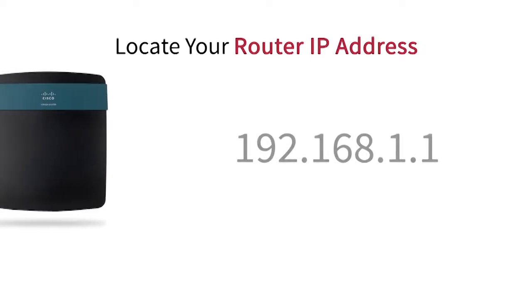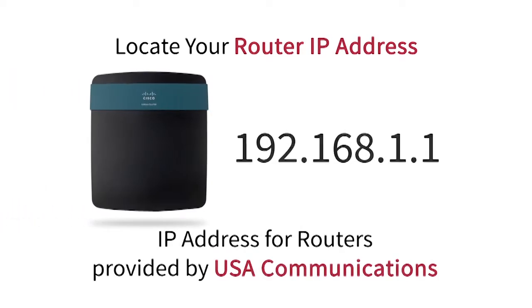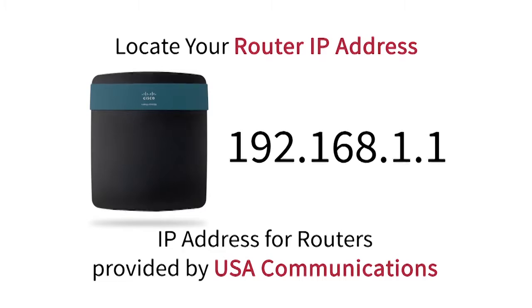Next, you will need to locate your router IP address. If you are using a wireless router provided by USA Communications, which is a Cisco router, the IP address is 192.168.1.1.